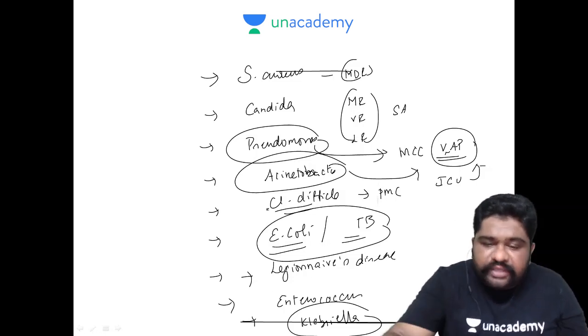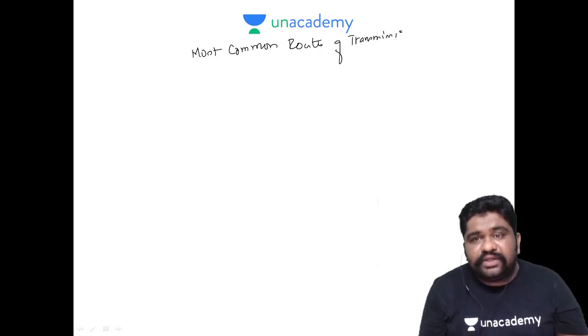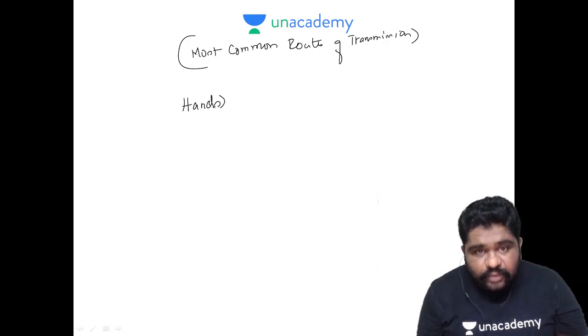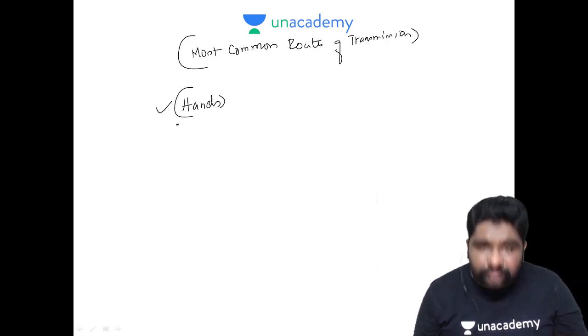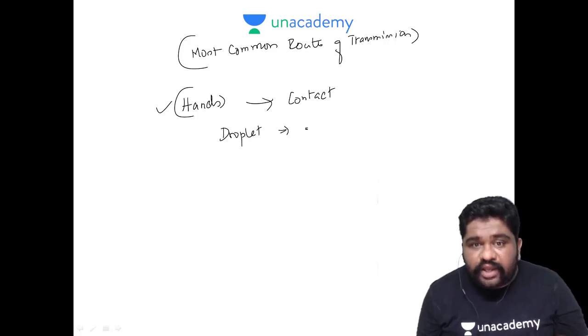What are the most common routes of transmission? Remember, from the time of Lister it has been very clearly understood that hands which are not properly sterilized is the most common route of transmission. This comes under contact transmission. Apart from direct contact, you can also have droplet transmission where aerosols can be formed which can spread from person to person by inhalation.